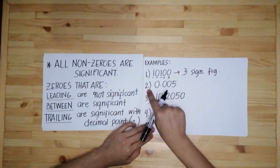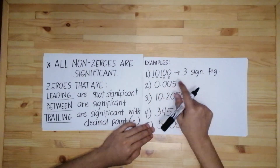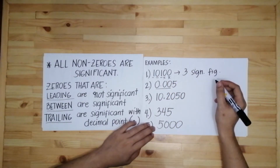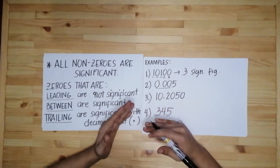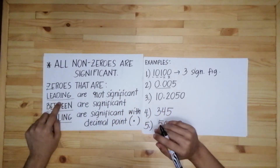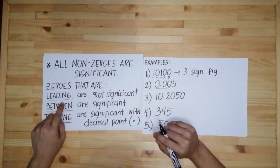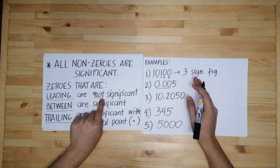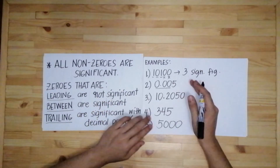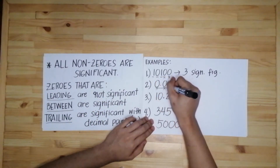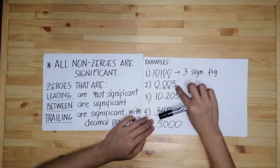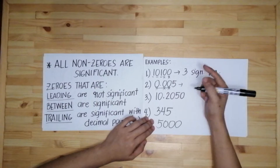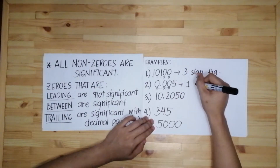Next, let's have number two: 0.005. These three zeros are what we call the leading zeros or the beginning zeros — nasa unahan sila, therefore leading ang tawag sa kanila. If they are leading, regardless of whether there is a decimal point or not, they are not considered significant. Five is a non-zero number considered as one significant figure. There is only one significant figure.